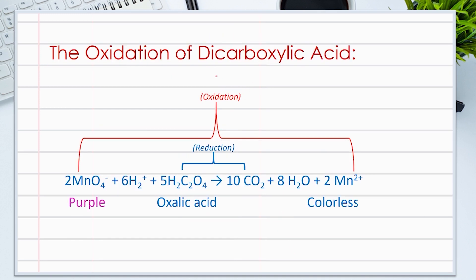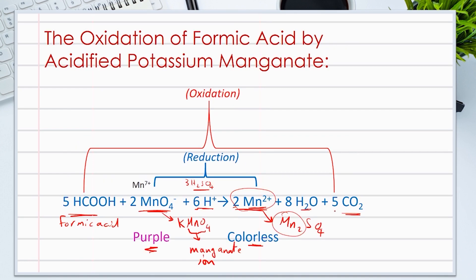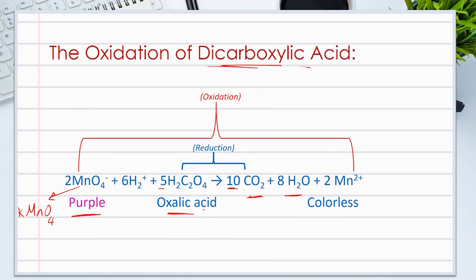Let's move to the oxidation of dicarboxylic acids by potassium manganate. Here we have one example of dicarboxylic acids, oxalic acid. The reaction is similar to the reaction of formic acid. 5 moles of oxalic acid react with potassium manganate to give carbon dioxide and water. Notice, oxalic acid gives the 10 moles of carbon dioxide, not 5, like formic acid, where the purple color of potassium manganate also disappears.